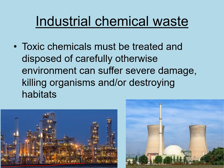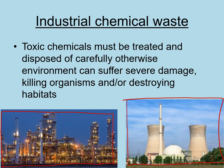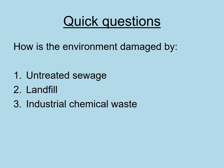Industrial chemical waste — commercial chemical factories making chemicals for industry, cosmetics, or cleaning products, and nuclear power stations both produce dangerous waste. Toxic chemicals must be treated and disposed of carefully, otherwise the environment can suffer severe damage, killing organisms or destroying habitats. Nuclear power plants, when carefully managed, actually produce much less harmful waste than fossil fuels. Nuclear incidents like Chernobyl and Fukushima are very few and far between, and so long as radioactive chemicals are contained, nuclear power is fairly safe.